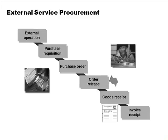When executing a service order for a customer, some external materials or services may need to be procured. You realize an external operation is needed, raise a purchase requisition, create a purchase order, release it, receive the goods, get the invoice, and make the payment. It's really just the standard purchase process, except that all of it is happening in the context of the service order.